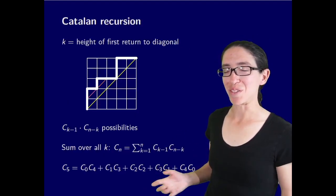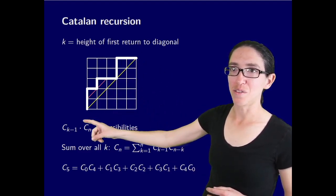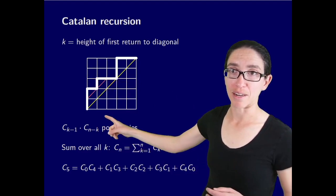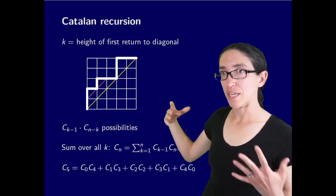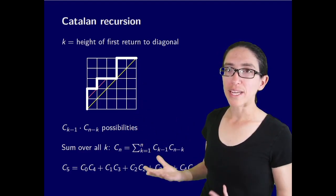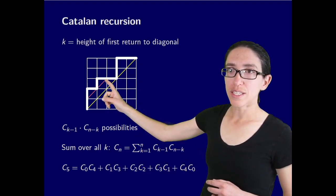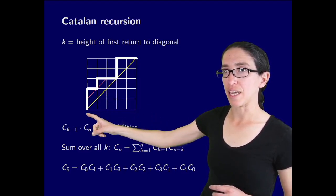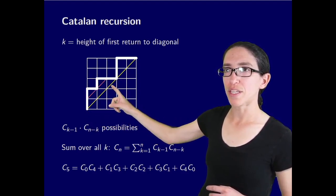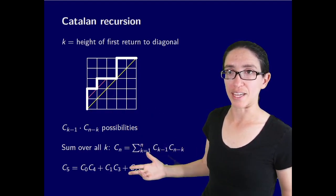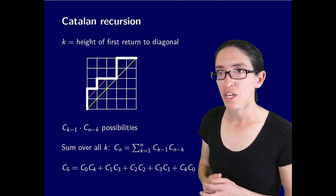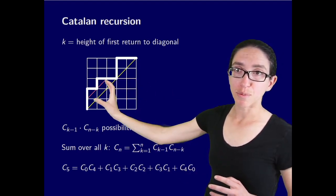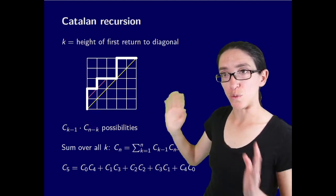It turns out there's a recursion for the Catalan numbers. Let's let k be the height of the first return to the diagonal of your Dyck path. So in this picture k equals 3 because at height 3 in the grid we've returned to the diagonal for the first time after 0. When you consider the first return to the diagonal, say we consider all possibilities that return at height k. If you draw a little red line one diagonal up from the yellow diagonal, then since we haven't touched this yellow diagonal anywhere in between step 1 and step k, we actually have a C sub k minus 1 count of ways going to point k.